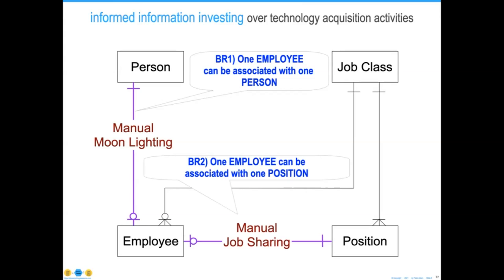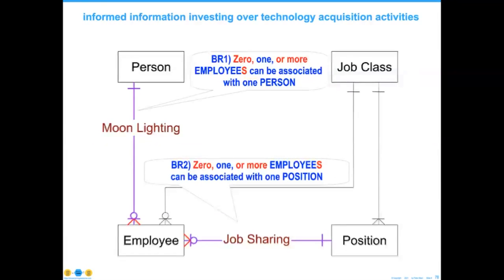This was particularly important because during the 10 years I was working with the Defense Department, we had almost 30% of the DOD workforce that also had a second job with another part of the Defense Department. So this manual moonlighting was a serious business problem. The way to fix this — if we were building the system from scratch — is to change the data model just slightly. Now it says, for moonlighting, zero or more employees can be associated with a person. Even though somebody may be an employee, if we wanted to fill that employee spot with two people, we could do that with this data model.